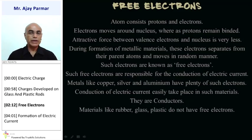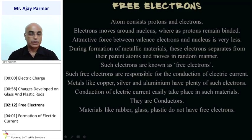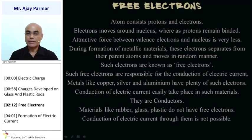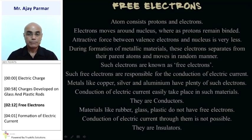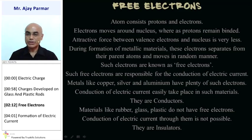Whereas materials like rubber, glass, and plastic do not have such free electrons, and because of that, we call them insulators, because the conduction of electric current is not possible in materials like rubber, glass, plastic, and so on. Hence, they are called insulators.